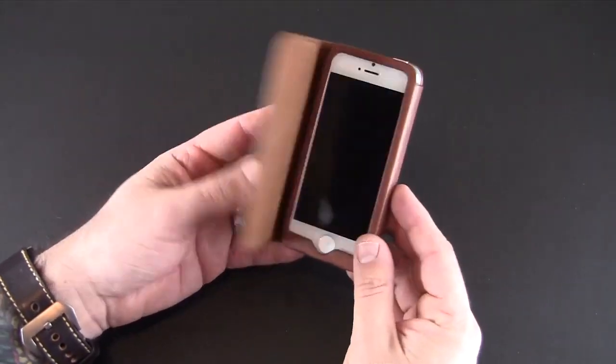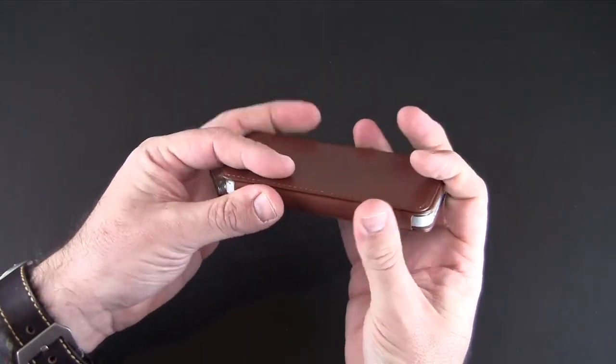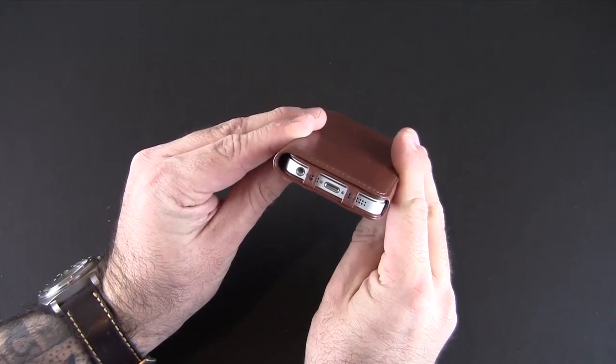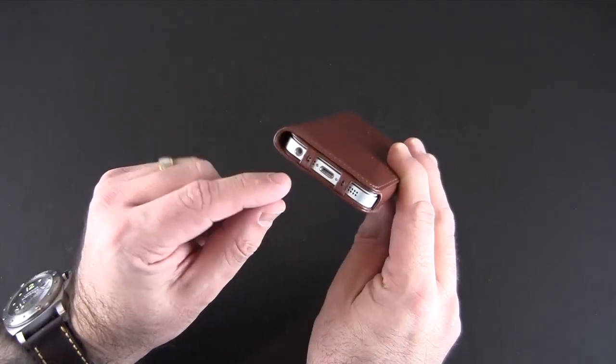Once your phone's in there you do have access to all of the ports and controls. You can see on the bottom it's totally exposed for the lightning port, the microphone, the speaker and the headset jack.